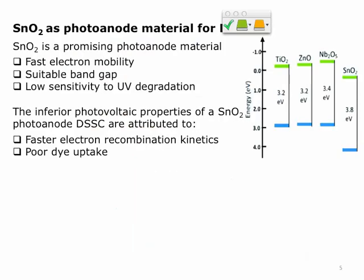In general, the majority of publications and industry use titania for dye-sensitized solar cells. However, tin dioxide is becoming a promising photoanode material. Its first advantage is much higher electron mobility compared to titania, and it also has a suitable band gap allowing effective electron injection from the dye. Since it has a wider band gap compared to its counterparts, it is also less sensitive to UV degradation.